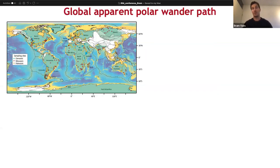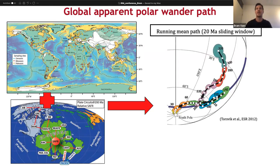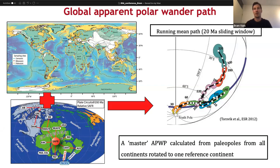Another important thing I worked on for my PhD is a so-called global apparent polar wander path. That means you gather data from all major continents, as you can see here in this map, and with a relative plate tectonic reconstruction, you can reconstruct the relative motions between those continents — for example, relative to a reference continent like Africa. That allows you to rotate the paleomagnetic pole positions to a single reference plate and build a global apparent polar wander path using the data from all these different continents. That master polar wander path then allows you to make a map of all these continents relative to the geographic pole.